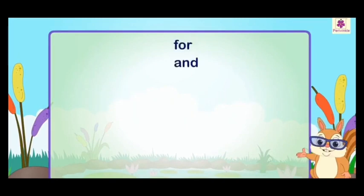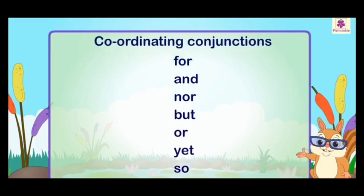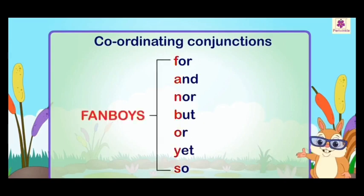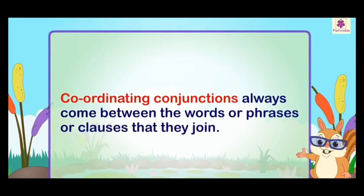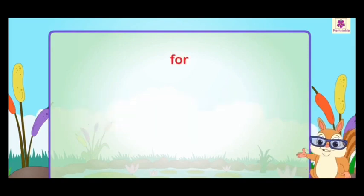First, I will tell you about FOR, AND, NOR, BUT, OR, YET, SO — these are called coordinating conjunctions. FANBOYS stands for coordinating conjunctions, and they always come between the words, phrases, or clauses that they join.